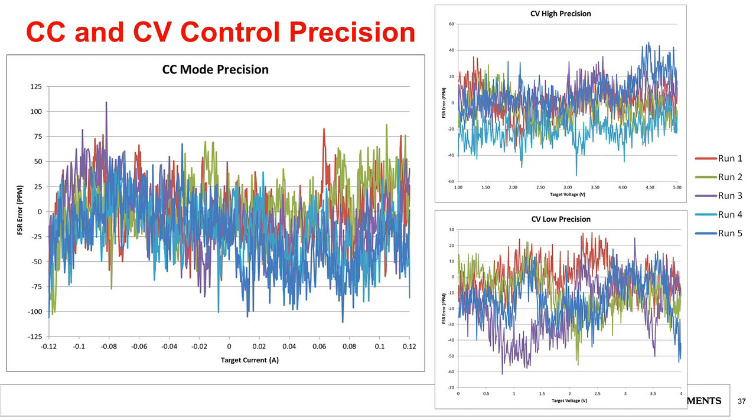Five runs were performed, with each run's data represented by a different color. The first run for each test was used for calibration. As shown, we were able to achieve better than ±125 ppm precision in constant current mode, with actual results closer to ±100 ppm.